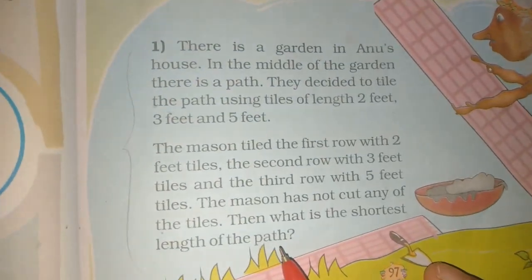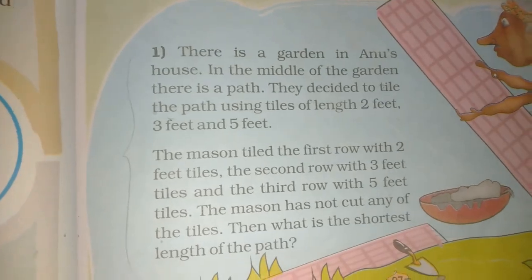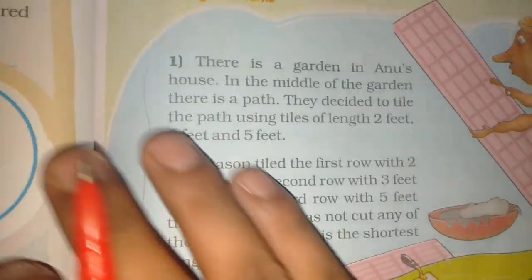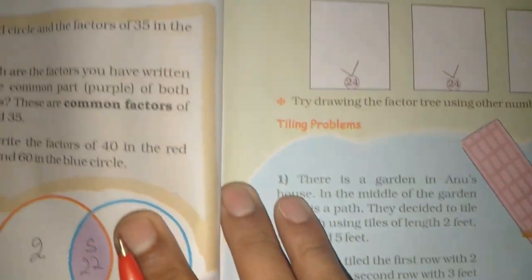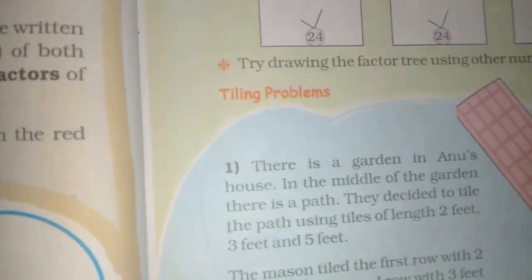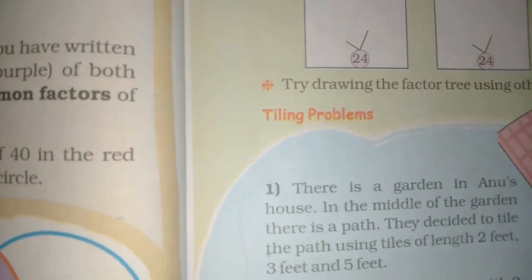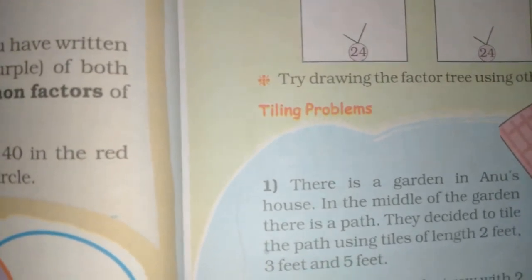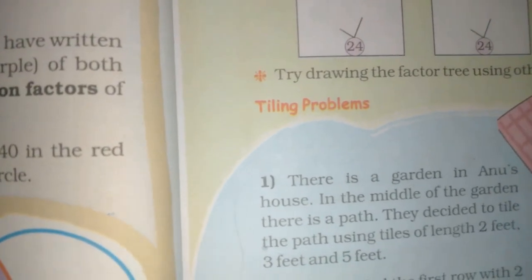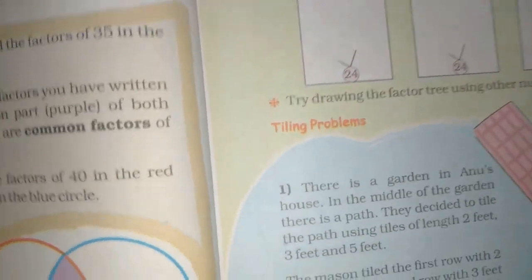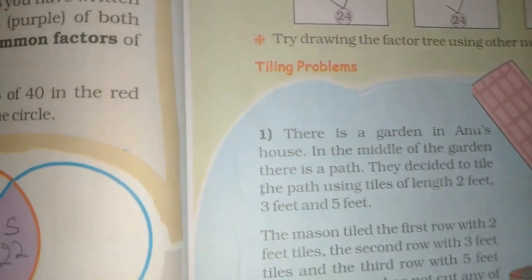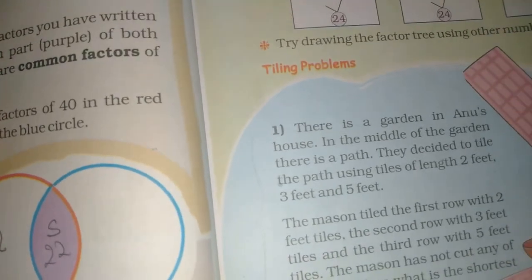So we have to find the least common multiple. What do we do for 2, 3 and 5? How do we get the least common multiple? We get the multiples. We will write the multiples of 2, 3 and 5. That is the smallest common multiple. Clear? Yes, sir. Start.